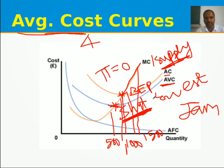For your exercise, you have to calculate all seven cost concepts using the given formulas and draw two graphs: one for the total cost curves (TFC, TVC, TC) and one for the average cost curves (AFC, AVC, ATC, MC).